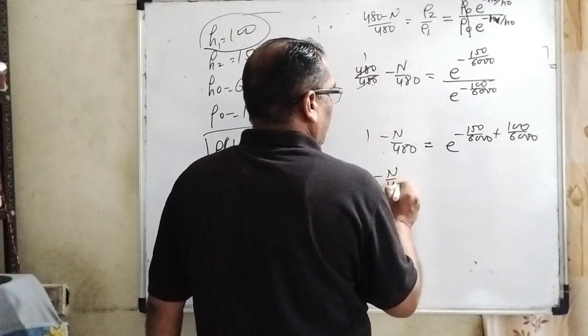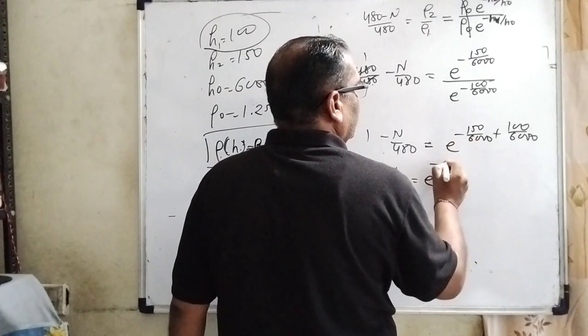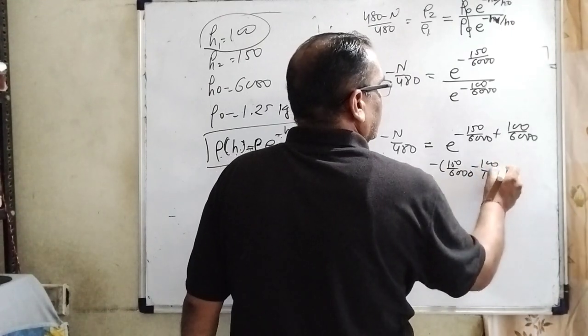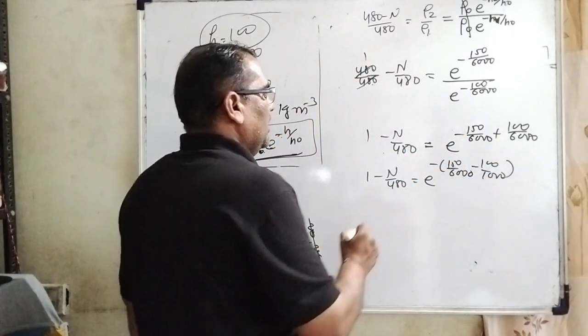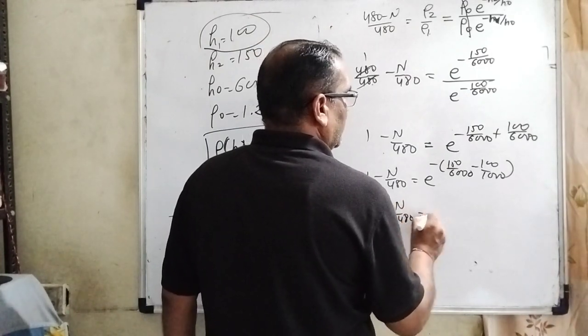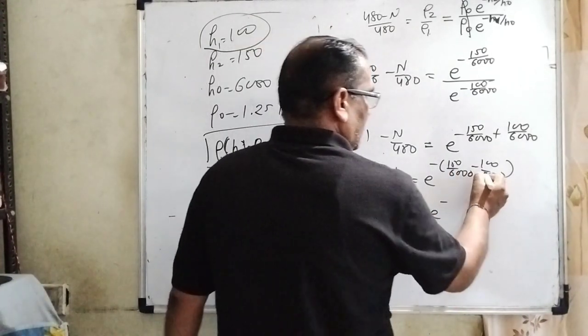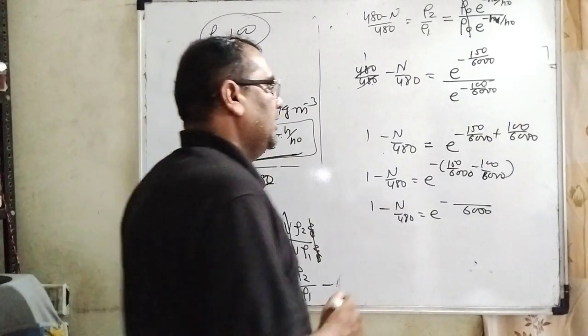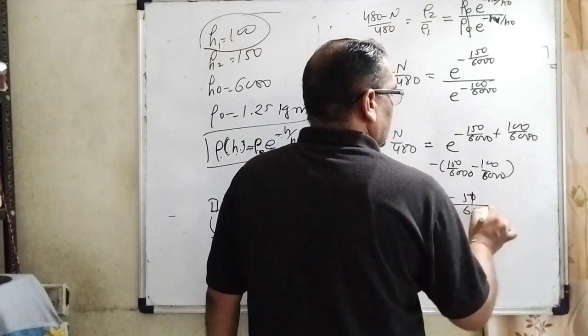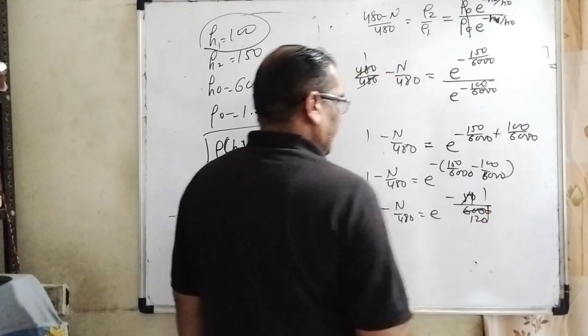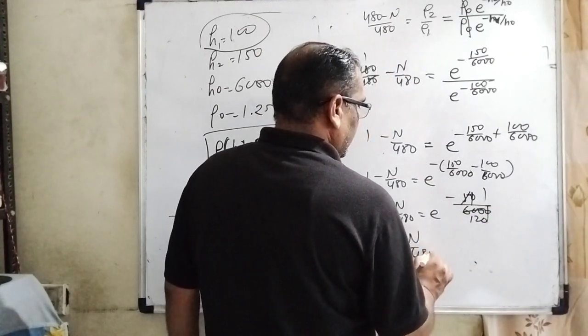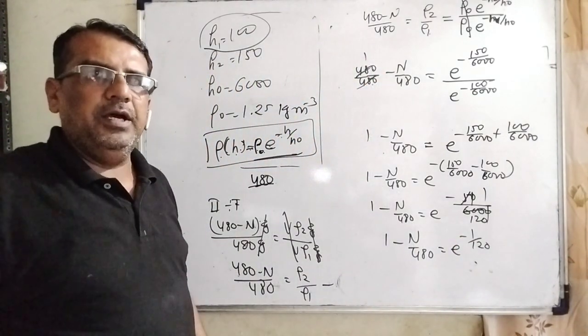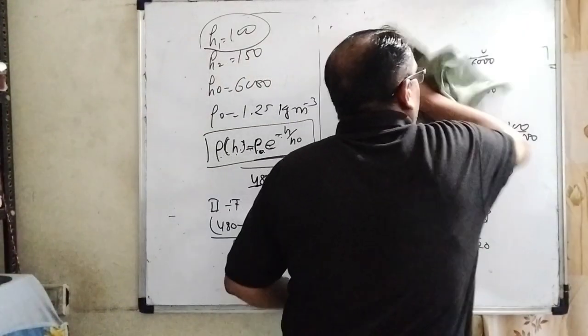Using the exponent law: 1 - n/480 = e^(-150/6000 + 100/6000). Taking the common denominator: 1 - n/480 = e^(-(150-100)/6000) = e^(-50/6000). Simplifying: 50/6000 = 5/600 = 1/120. So 1 - n/480 = e^(-1/120).